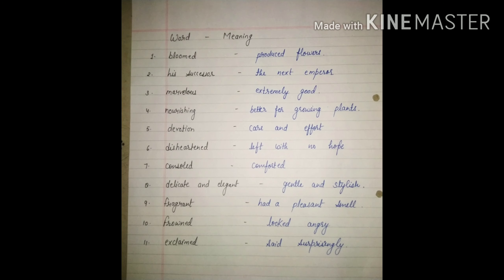On the next page, write down the word meanings for the same chapter. 'Bloomed' means sprouted, produced flowers. 'Successor' means the next emperor. 'Marvelous' means extremely good. 'Nourishing' means better for growing plants. 'Devotion' means care and effort. 'Disheartened' means left with no hope. 'Console' means comfort. 'Delicate and elegant' means gentle and stylish. 'Fragrant' means had a pleasant smell. 'Frowned' means looked angry. 'Exclaimed' means said loudly. Note this work in your notebook. Use black pen for questions and blue pen for answers - only blue and black gel pen. Write neatly and correctly, learn all difficult words and word meanings. Thank you and have a nice day.